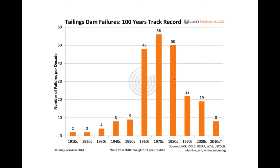The 1960s, 70s, and 80s follow the global boom after World War II, when record consumption drove an incredible number of dams being built. One interpretation of the higher failure rate is the absence of strict guidelines regulating tailings dam construction. Today, strict engineering protocols are required to reduce potential environmental degradation. That doesn't mean failures don't occur—over the last decade there have been at least eight tailings dam failures according to 2014 data, and that number is now approximately 13 or 14.